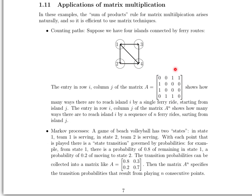That's how you construct this matrix — it has all that information in it. If we take this matrix and raise it to the nth power, say we're asked: after three ferry rides, how many ways are there to get from island one to island three? All we have to do is take matrix A, raise it to the third power — literally multiply it by itself three times — and then look at the number in the location corresponding to from island one to island three. That gives us the answer.